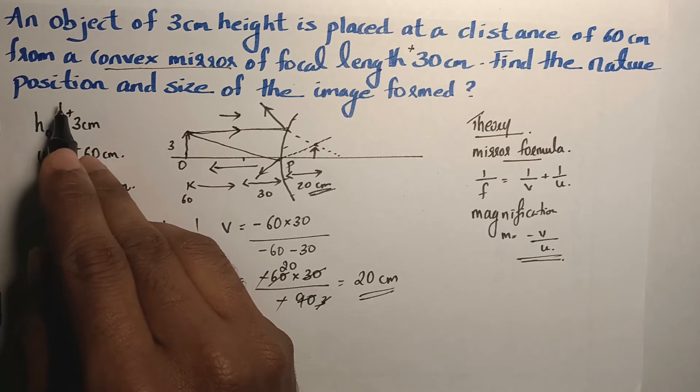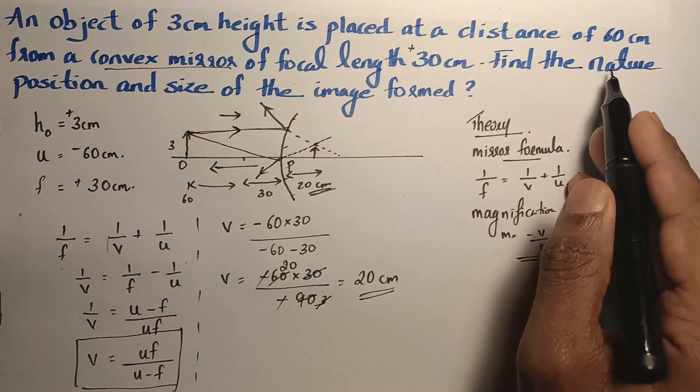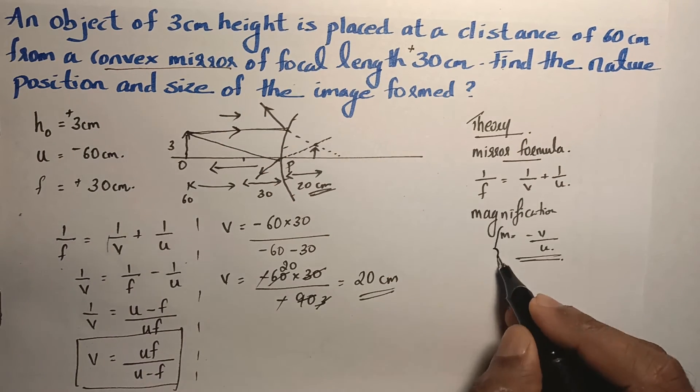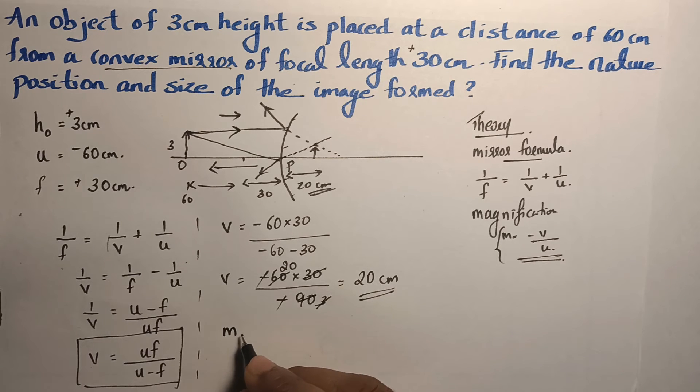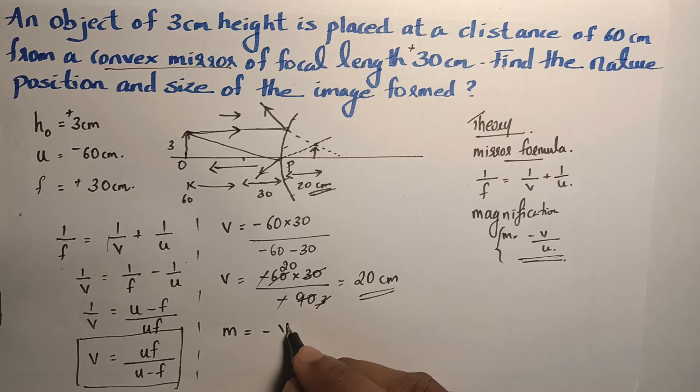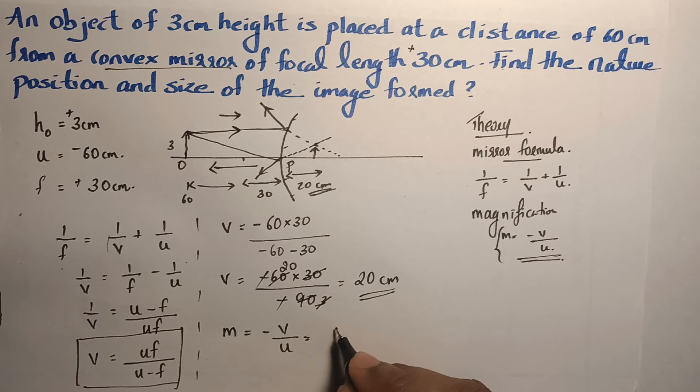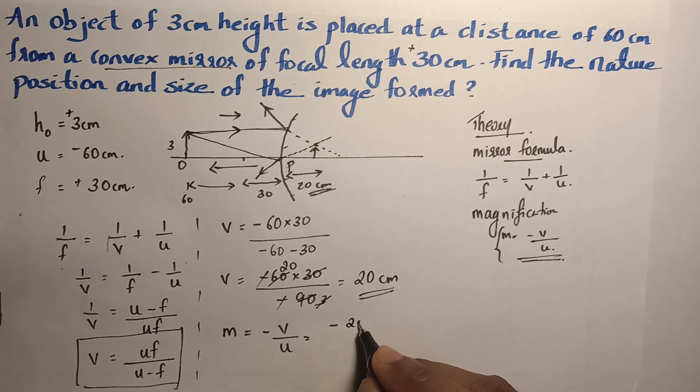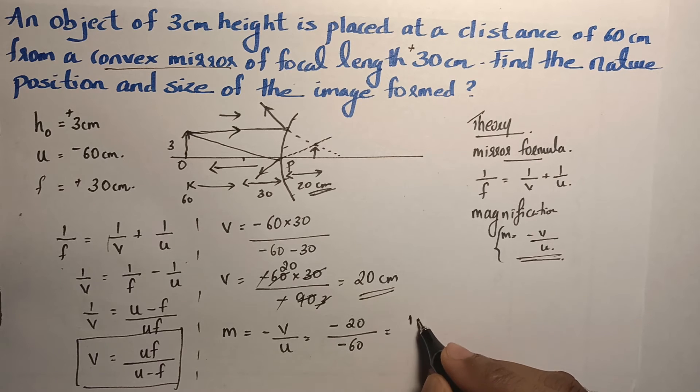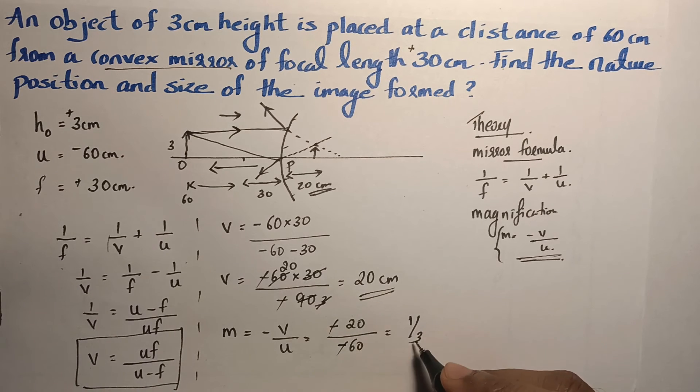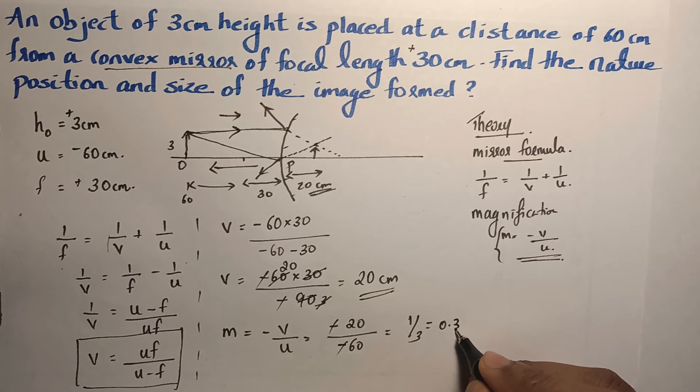Now, we got the position of the image. Now, we need to explain its nature and size. To explaining nature and size, we will find out the magnification. Magnification M is equal to minus V by U equal to minus V. The value of V is 20 by value of U is minus 60. So it becomes 1 by 3. Minus and minus gets cancelled and it is 1 by 3 or 0.33.